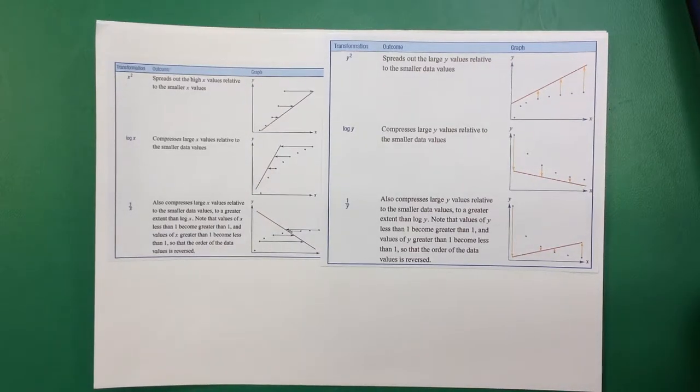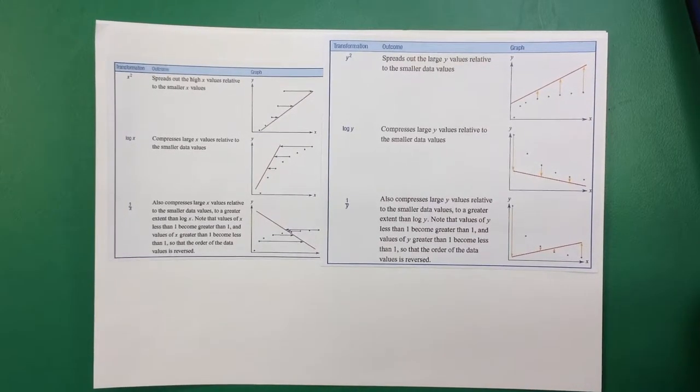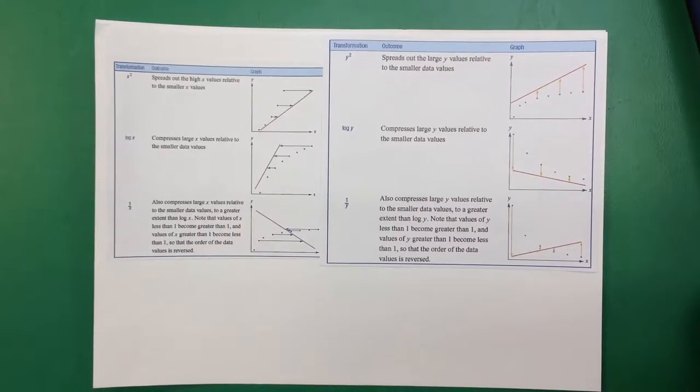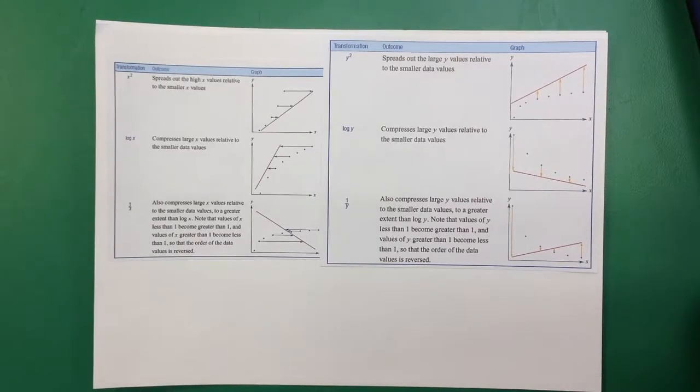We talked pretty briefly in our last video about how to transform something on our calculator. But let's look now at really what it actually means when I say let's transform. What are we actually doing to the data? What's happening? We know we're trying to make it look linear.